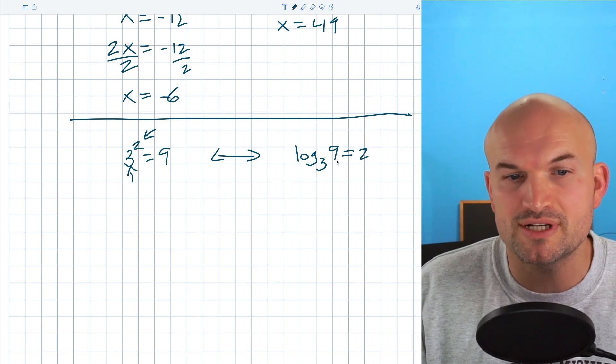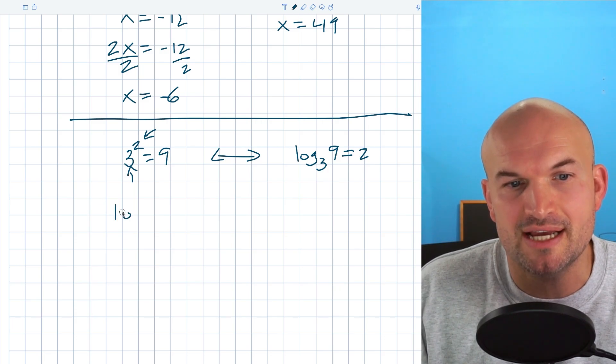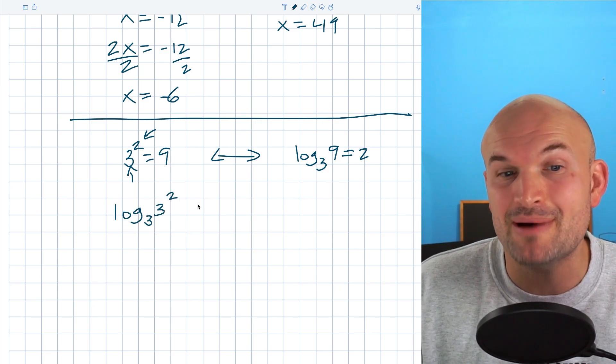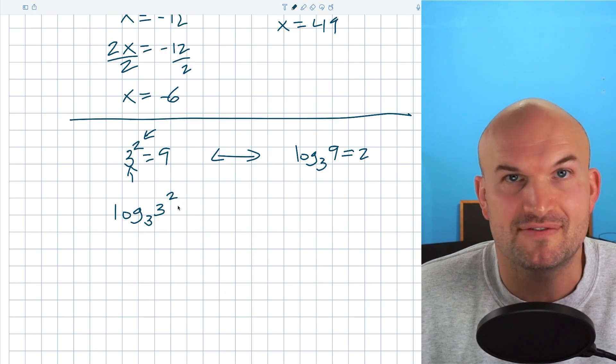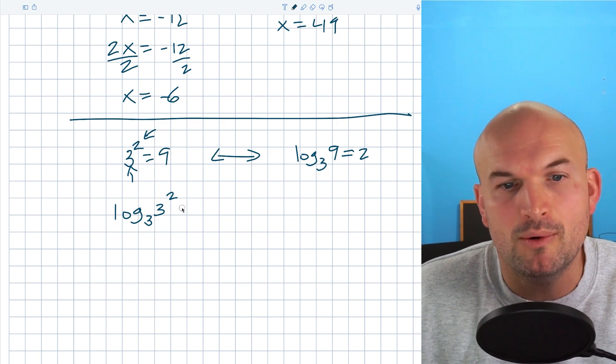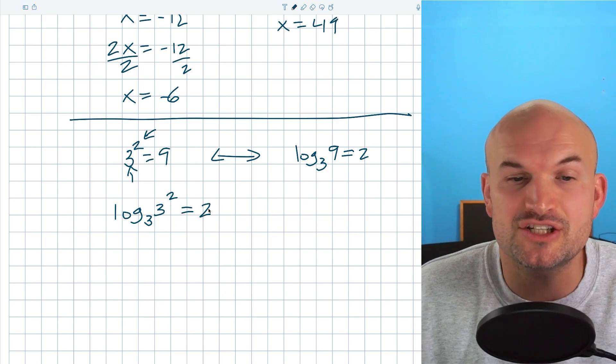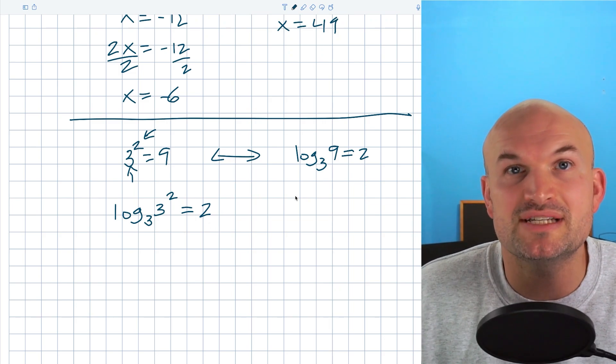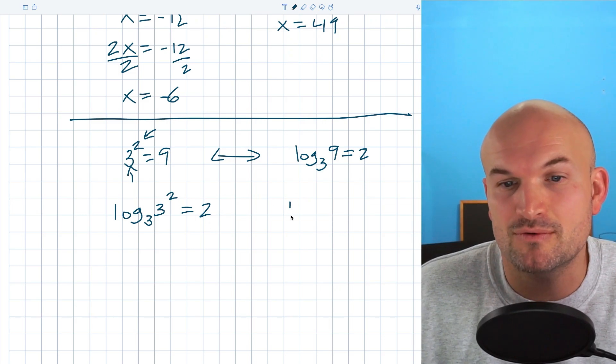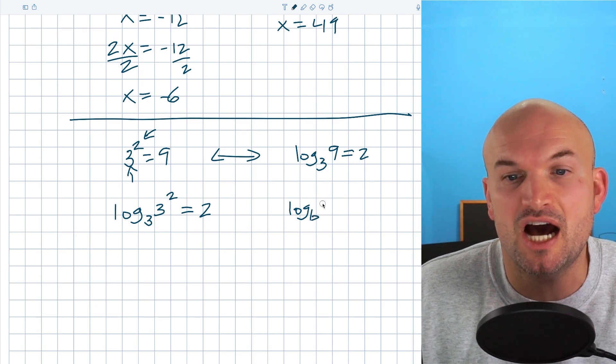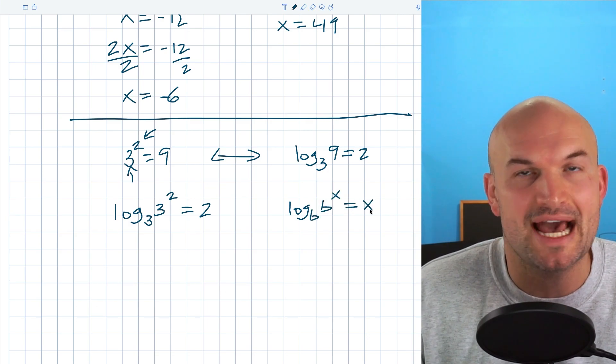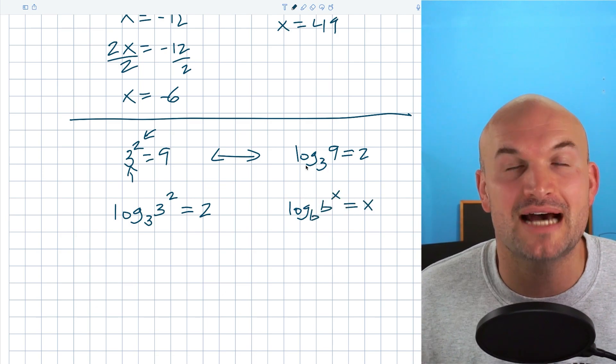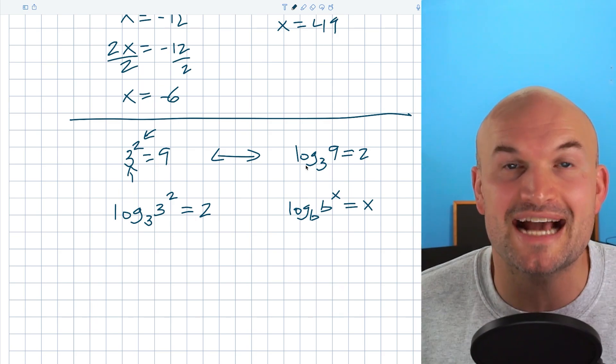Now, this is really important to understand because I can also say log base 3 of 3 raised to the second power. Because 3 squared is obviously 9. So it's the exact same answer. But what we get here is 2. We can actually summarize this equation by using a variable b and x, where I can say log base b of b raised to the x equals x. Now, this is for logarithms.